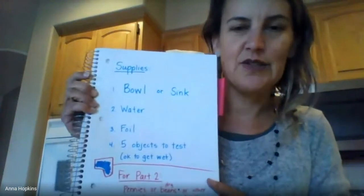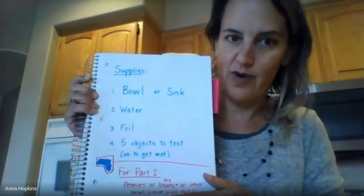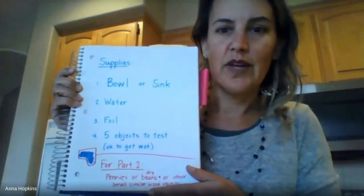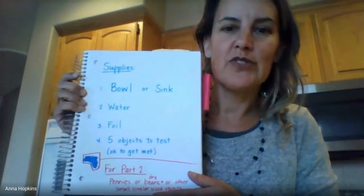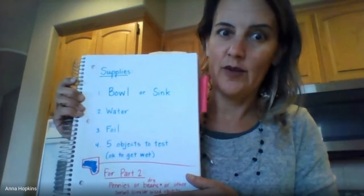Okay, so here's your challenge for sinking and floating. We found out that some things sink and some things float depending on a couple of things — they could be denser than the water or there could be buoyancy related to the shape of the object. The first thing we're going to test out is density. You'll need a bowl or a sink with water, some foil, and five objects you can test out that are okay to get wet.